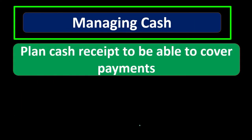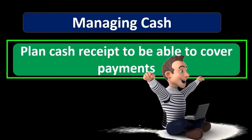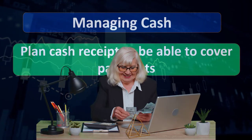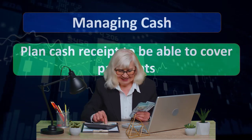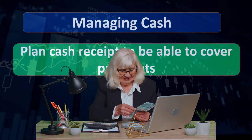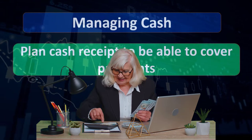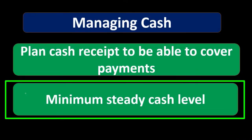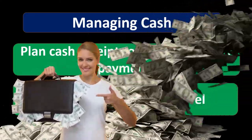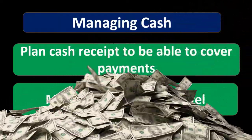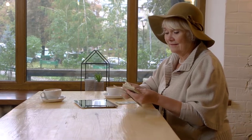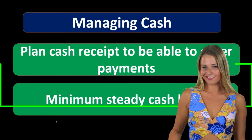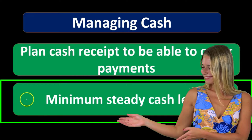When talking about managing cash, we're talking about planning receipts to cover payments. Under accrual accounting, revenue and expenses are not recorded based on cash flows, so we need to separately manage our cash. We want to optimize net income while also ensuring we manage cash flows so we have enough to cover payments. However, we also want to maintain a minimum steady cash level — it's not efficient for a business to hold a lot of cash since the objective is to earn revenue, not sit on purchasing power.